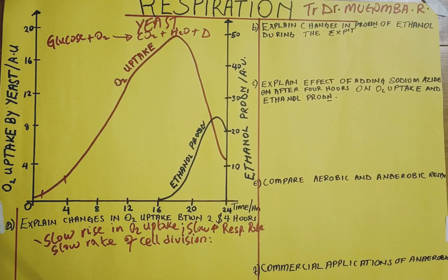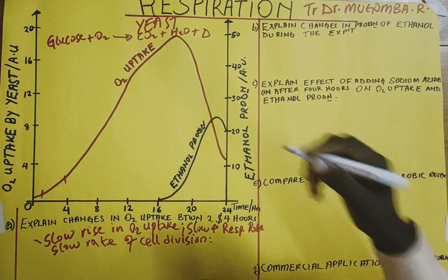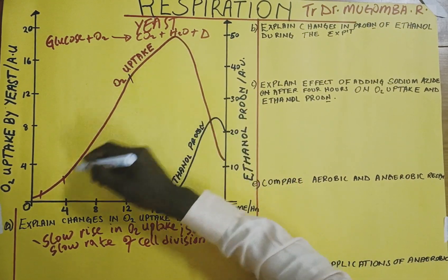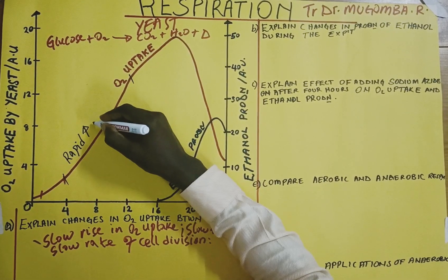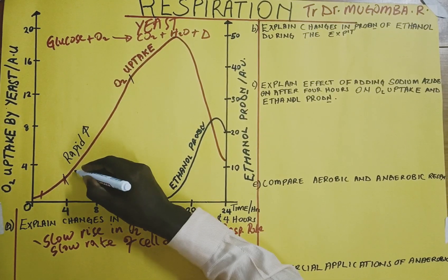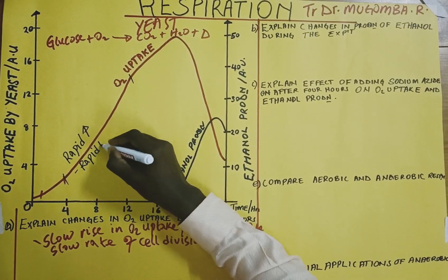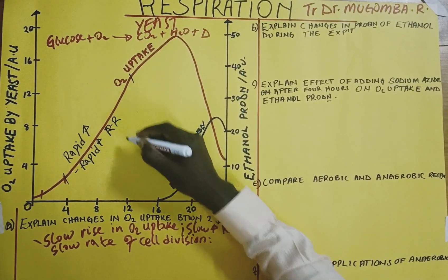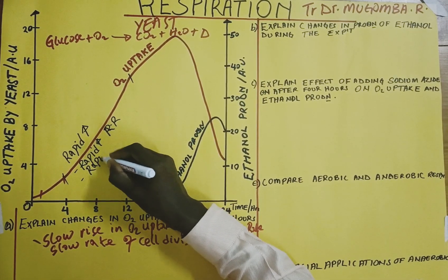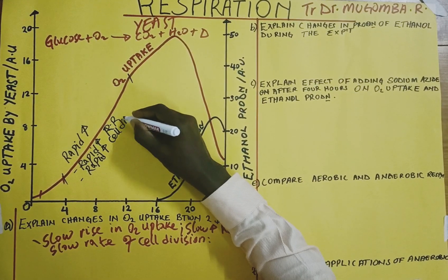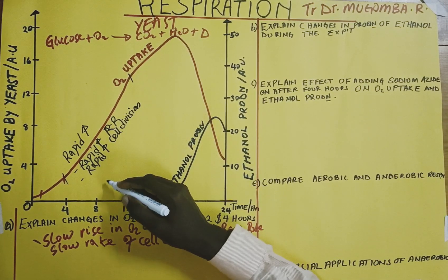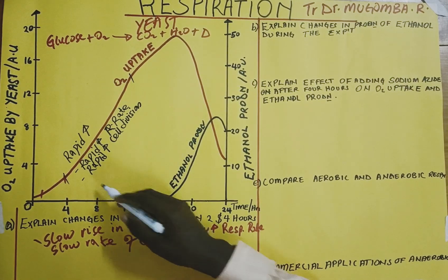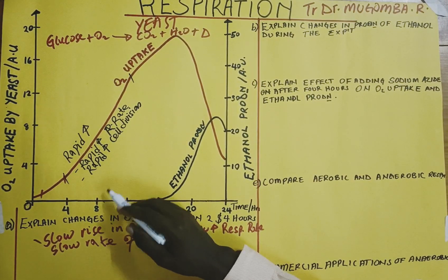From 4 hours to 12 hours, we see a rapid increase in oxygen uptake. This rapid increase is a result of a rapid increase in respiration rate or metabolic rate. We are seeing a rapid increase in cell division - the rate at which cells are dividing is increasing rapidly. When the cells are increasing rapidly, the rate at which respiration takes place will also be rapid, explaining the rapid uptake of oxygen.